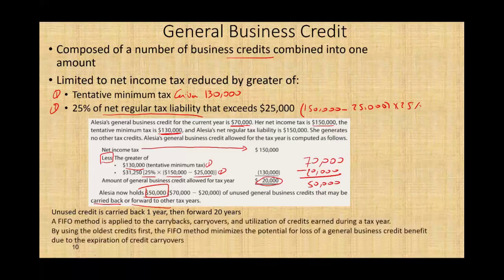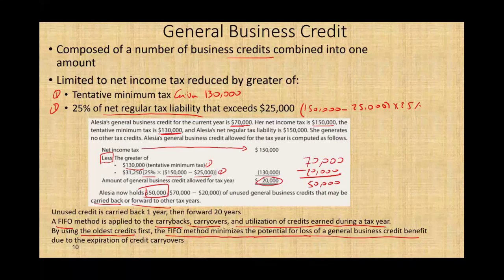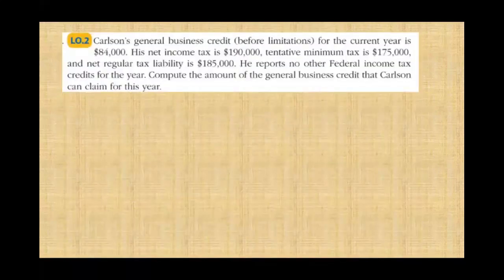Alicia holds $50,000 of unused general business credit. When utilizing any carryforward, FIFO — first in, first out — is applied, meaning we use the oldest credits first. A FIFO method is applied to the carry back, carryover, and the utilization of credits earned during the tax year. The FIFO method minimizes the potential loss of the general business credit benefit due to the expiration of the credit carryover.